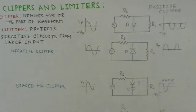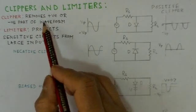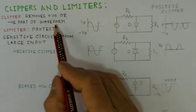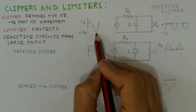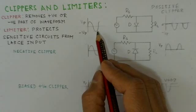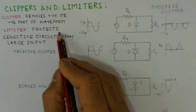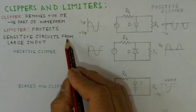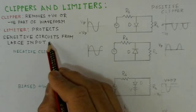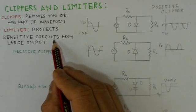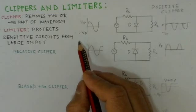The next circuit is the clipper, also called a limiter circuit. A clipper has the property of removing the positive or negative part of a waveform — it can remove the positive peak or the negative peak. A limiter circuit is similar to a clipper but removes only the excessive part of a waveform. For a large input with a lot of noise overriding the signal, you can clip or limit the waveform to a certain level where the noise is reduced.